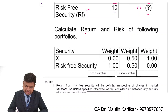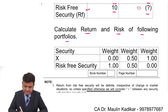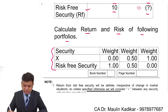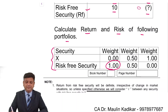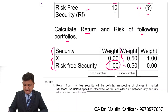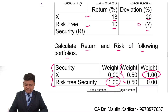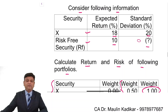The question says to calculate the return and risk of the following portfolios. There are three portfolios provided: the first has investment made only in the risk-free security, the second has investment in both X and the risk-free security, and the third has investment made only in X. For these three portfolios we are required to compute the return and risk.